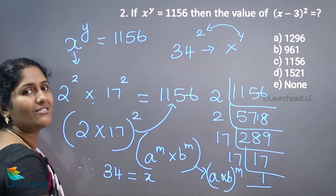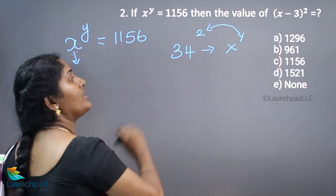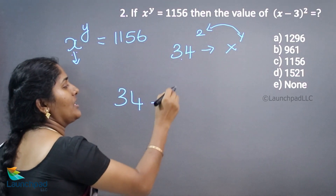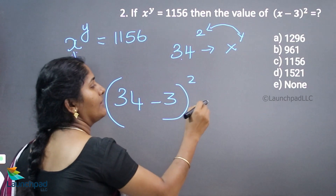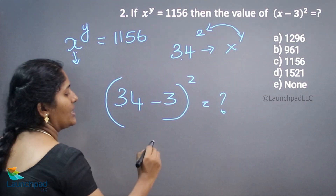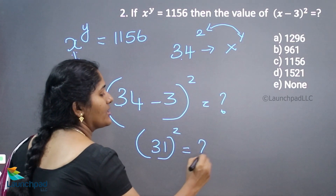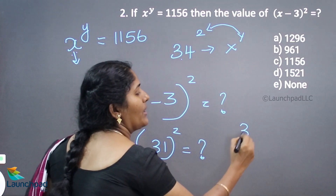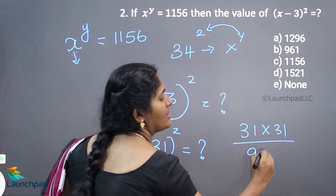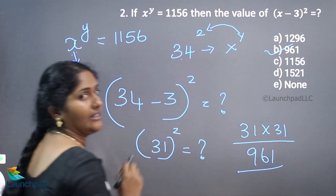Your question is x minus 3, the whole square, equal to what? The x value here is 34, so 34 minus 3, the whole square. 34 minus 3 is 31, so 31 squared equals 31 into 31, hence the answer is 961. Option B is correct.